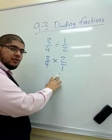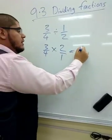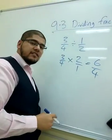Done. And we already know how to do this, because we just multiply the numerators, multiply the denominators, and we are getting 6 over 4.